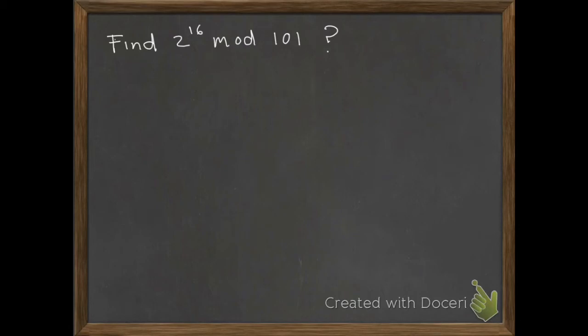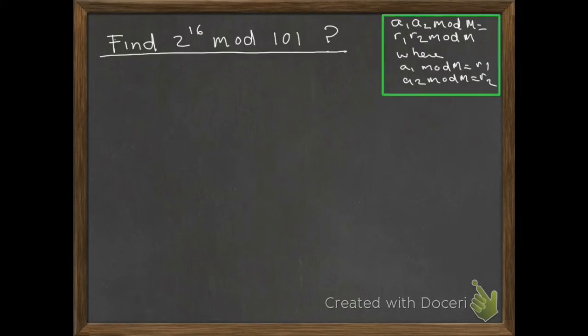Our problem is to find 2^16 mod 101, and we'll write in the corner what we just showed: a1 times a2 mod m equals r1 times r2 mod m.